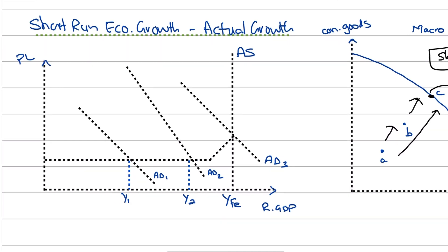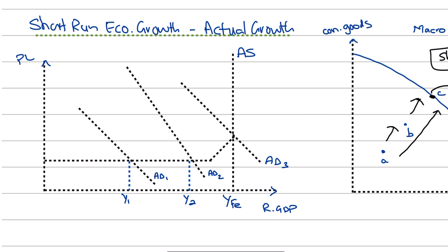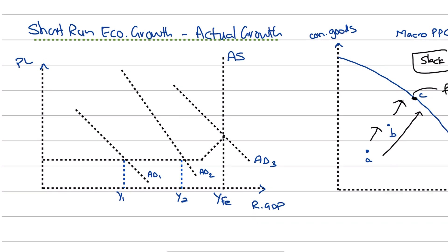Coming to the ADAS model diagram, I've shown a Keynesian aggregate supply curve. I personally favor the Keynesian aggregate supply diagram because here you can also talk about the slack and the spare capacity. Initially, our real GDP was at Y1, where AD1 was intersecting the aggregate supply. The full employment level of output is YFE, and Y1 is quite far from YFE, showing a negative output gap — a recessionary or deflationary gap. An increase in aggregate demand, maybe due to a rise in consumer spending, government spending, or exports, would shift AD outwards from AD1 to AD2, causing real GDP to go up from Y1 to Y2.